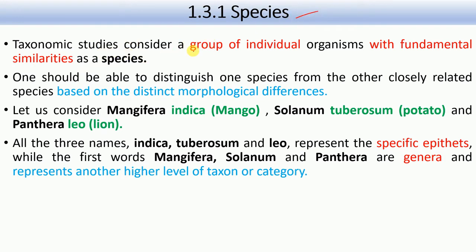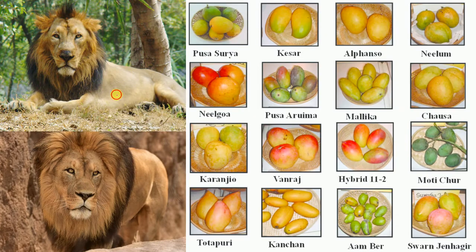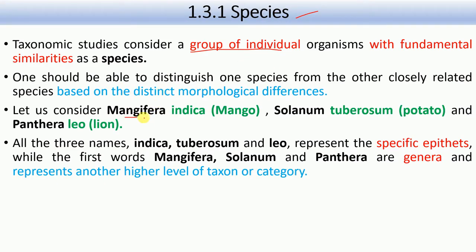Species is a group of individual organisms with fundamental similarities. For example, the Asiatic lion and the African lion — one is from Asia and one is from Africa — but they are both lions. Similarly, there are many varieties of mango, but they are all mango. So: Mangifera indica (mango), Solanum tuberosum (potato), Panthera leo (lion). Here, Mangifera, Solanum, and Panthera represent the genus, while indica, tuberosum, and leo represent the species or specific epithet.